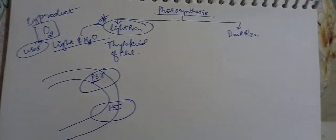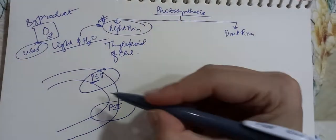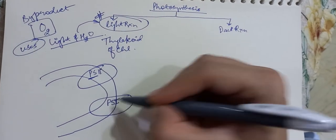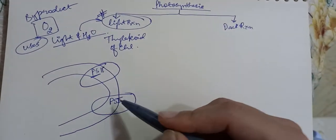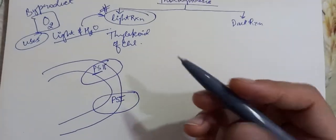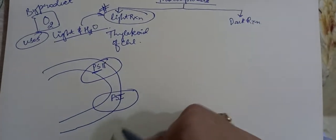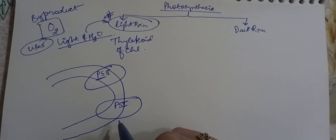This two and one naming actually came just because of the sequence of discovery. So this has nothing to do with the sequence of events that happen in the light reaction.